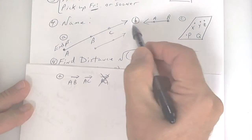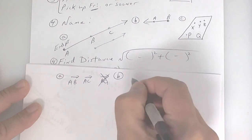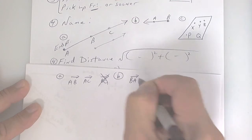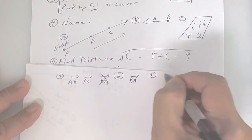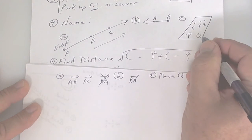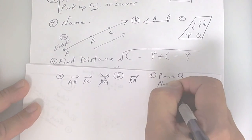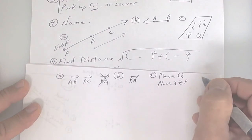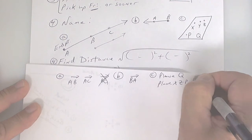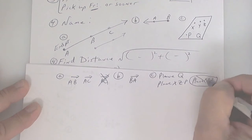This one goes backwards but starts at B, so the answer for part B is ray BA — notice the arrows go in the same direction. The last one is a plane, so you could say plane Q using that fancy letter, or use three points like XZP — plane XZP. You cannot say plane XYZ because that's collinear; it has to be three non-collinear points.